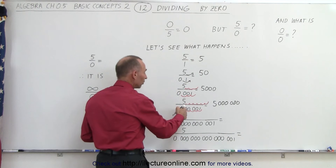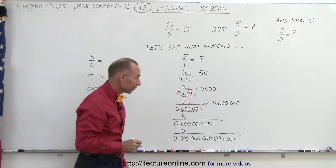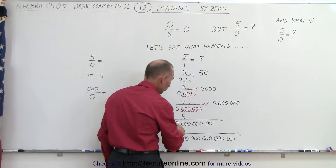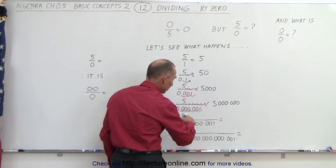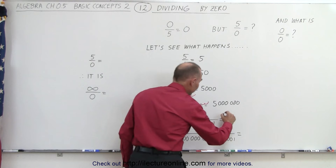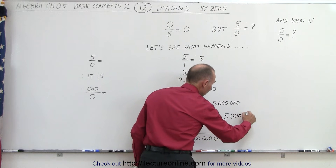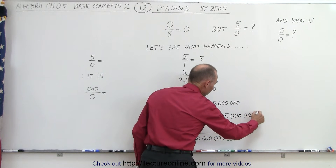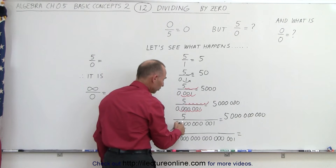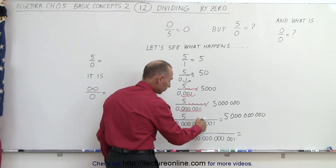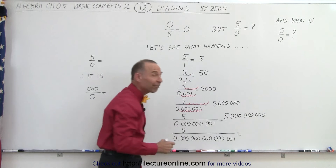Notice: the smaller the denominator, the bigger the result we get. Moving it over nine spaces means we need nine zeros. So dividing five by 0.000000001, we end up with five billion.